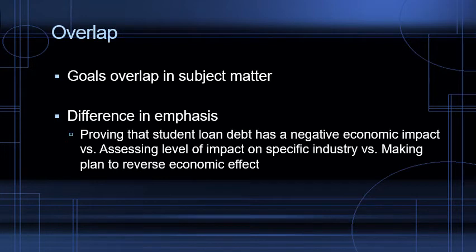Notice there's a lot of overlap in these different goals — they're not necessarily mutually exclusive. The main difference is often just a difference in emphasis. So proving that student loan debt has a negative economic impact is somewhat different in emphasis from assessing the level of that impact on a specific industry, and that's different from making a plan to reverse the economic effect. The goals all deal with some of the same information and you'd probably use many of the same sources, but it's about the way you're using the information to different purposes.